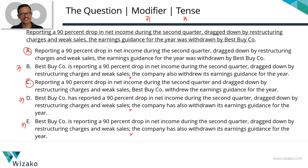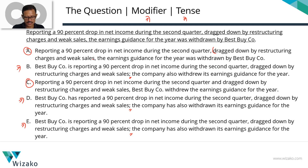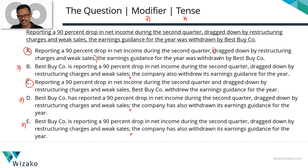Let's check out which makes sense. Starting with answer option A: 'Reporting a 90% drop in net income during the second quarter — dragged down by restructuring charges and weak sales' appears between the two commas, so it's basically a parenthetical expression giving us a cause for the drop in net income. Setting that aside: 'Reporting a 90% drop in net income during the second quarter, the earnings guidance for the year was withdrawn by BestCo.'